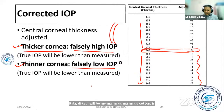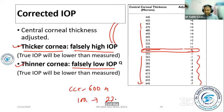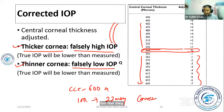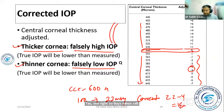For example, if a patient has a corneal thickness of 600 µm, which is higher than the normal 545 µm, the measured IOP will be falsely elevated. The actual IOP will be lower than the measured value, so a correction must be applied to avoid overestimating the true intraocular pressure.